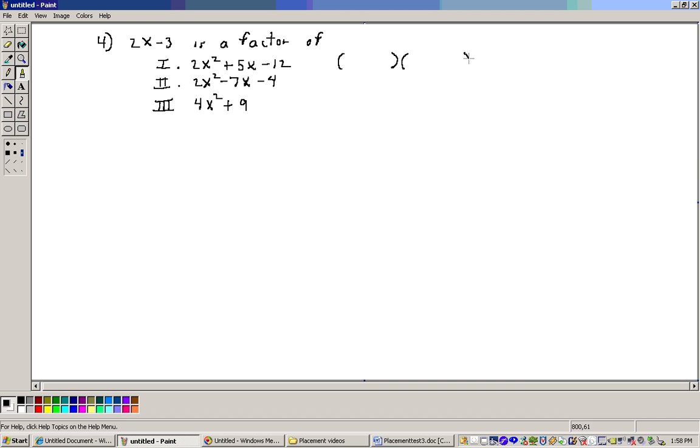2x squared plus 5x minus 12 factors into (2x)(x). The minus sign means the signs are different, one positive and one negative. I need factors of 12 that will give me 5x when I FOIL. Factors of 12 like 4 and 3 will work. If I put 4 here and 3 here, checking my inner and outer, 4 times 2x gives me 8x, minus 3x is 5x. So 2x minus 3 is a factor of this one, but it could also be a factor of others, so let's check the next one.